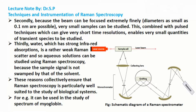Thirdly, water, which has strong infrared absorptions, is a rather weak Raman scatterer, and so aqueous solutions can be studied using Raman spectroscopy because the sample signal is not swamped by that of the solvent. These reasons collectively ensure that Raman spectroscopy is particularly well suited to the study of biological systems.